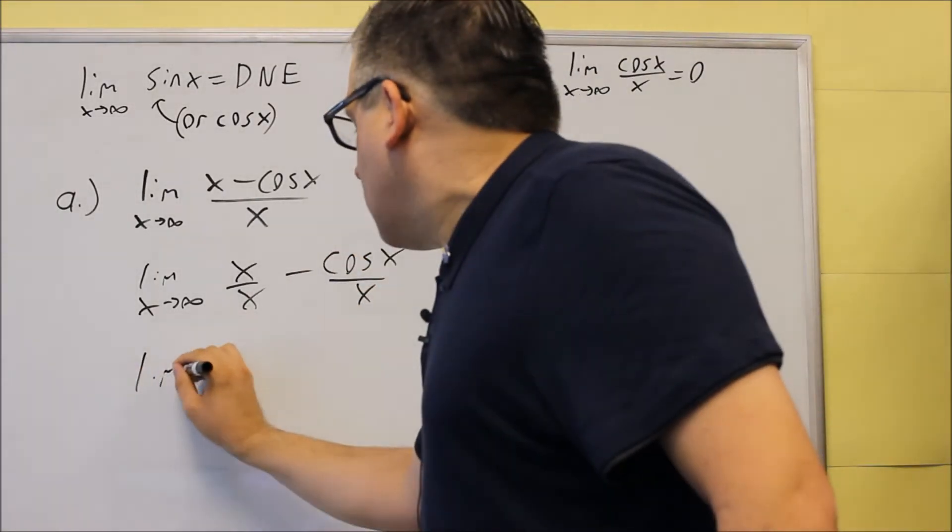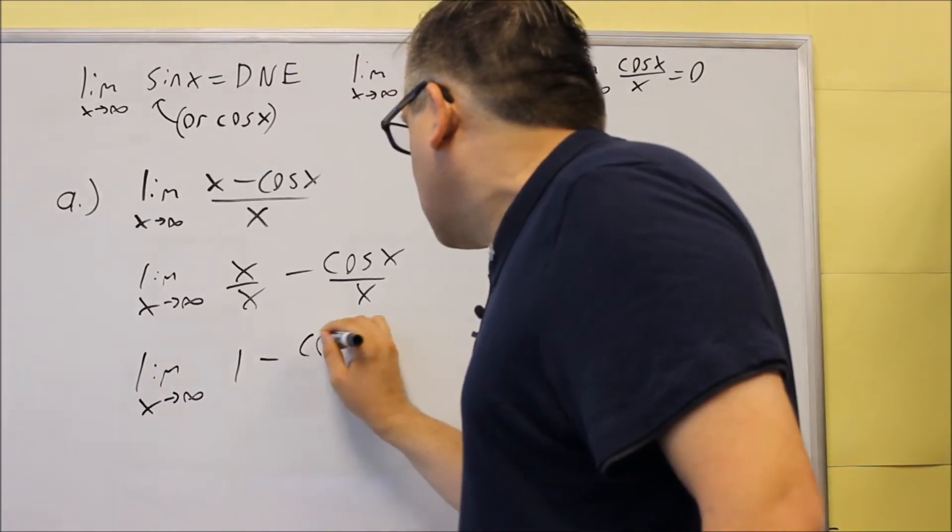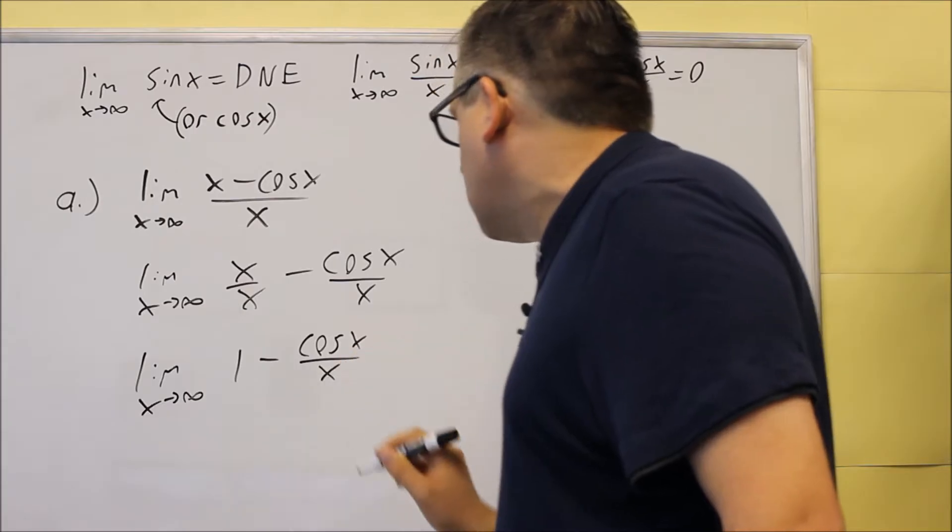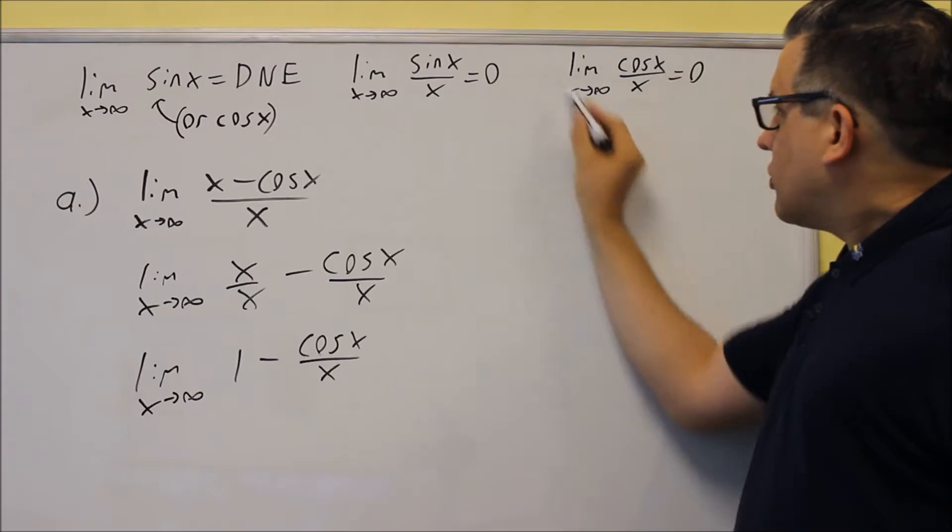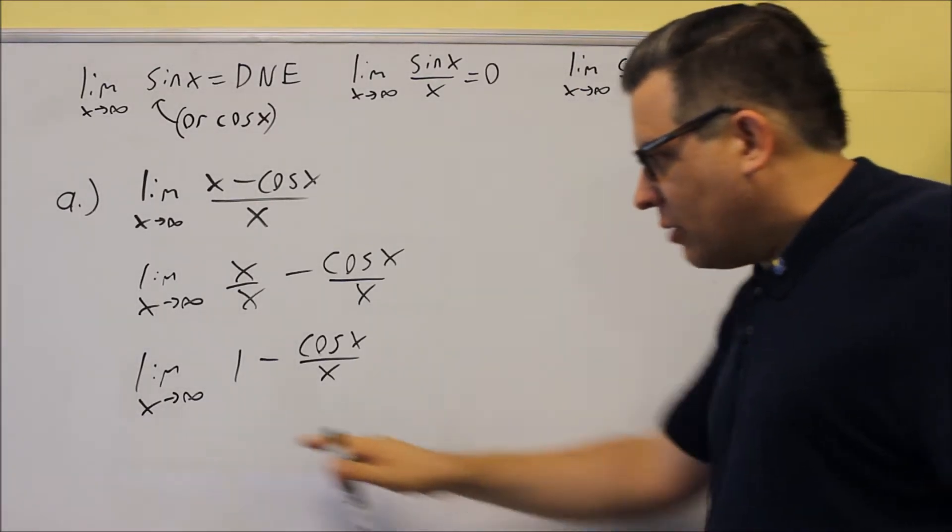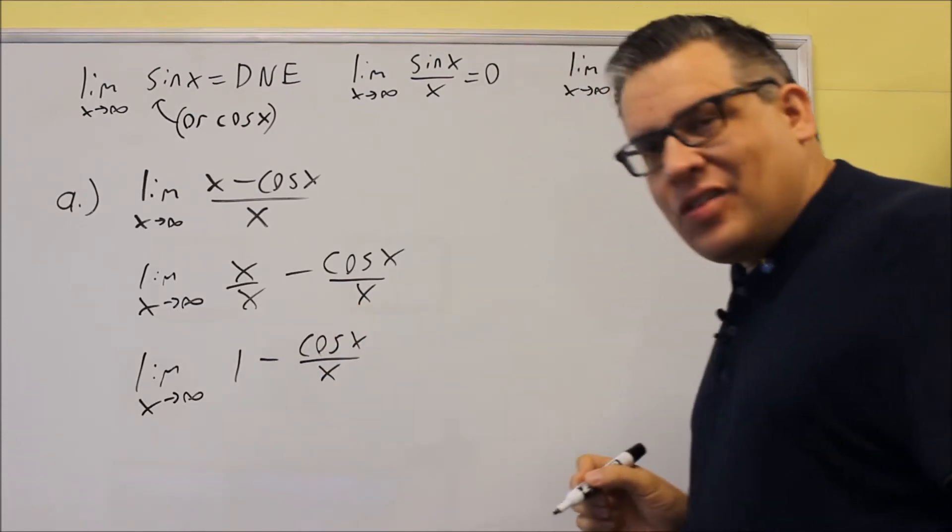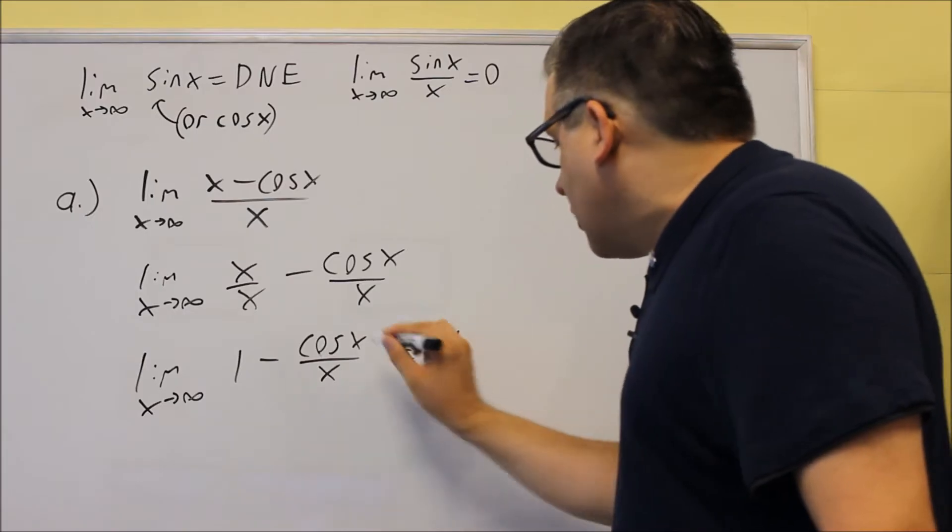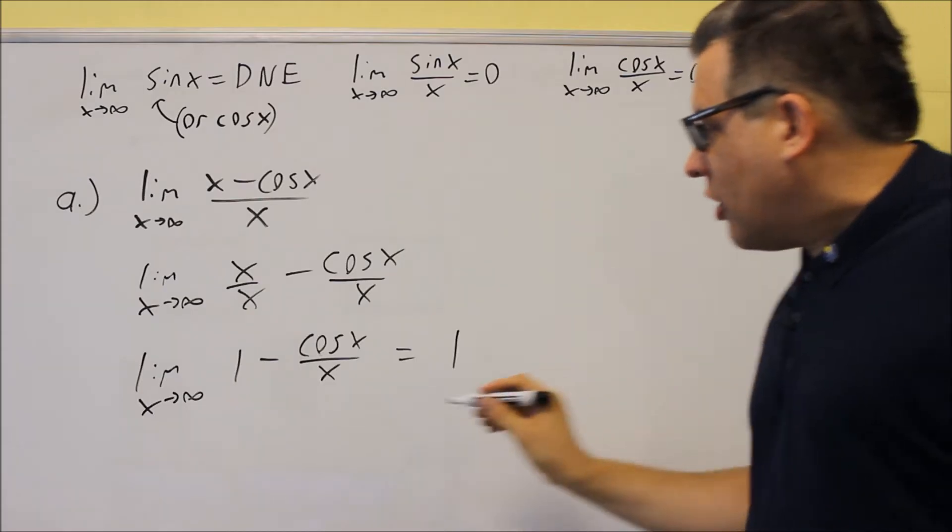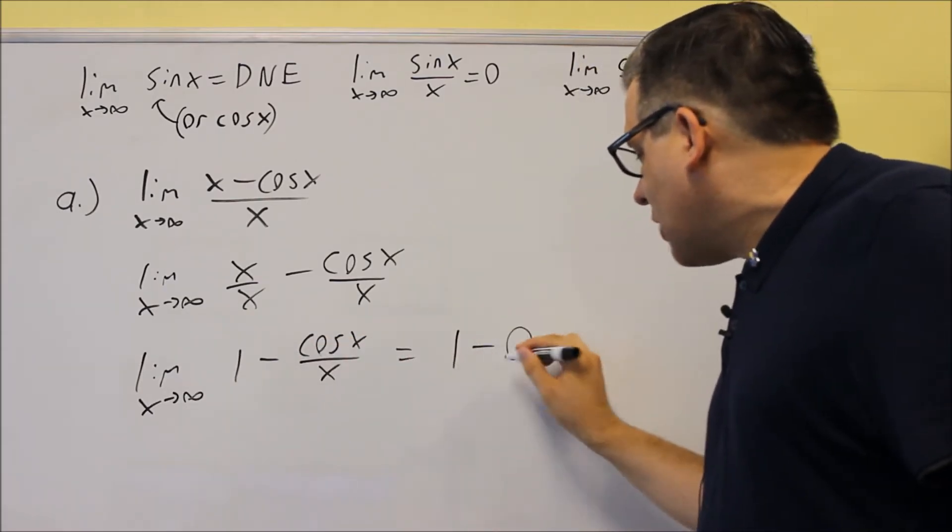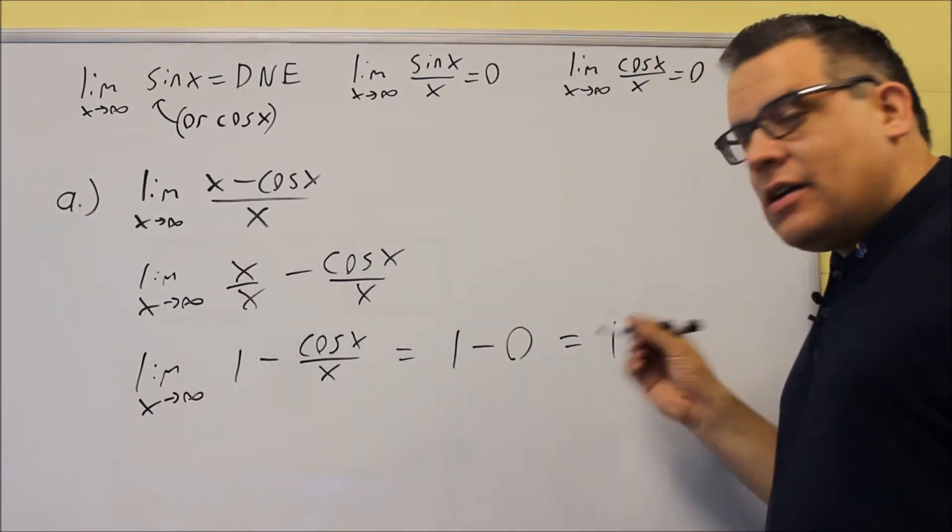Then I can simplify it, and x approaches infinity. This is 1 minus cosine x over x. So now, the reason why we wanted to do that was to create this limit by itself. So the limit does apply to each one individually. If we apply the limit to this one right here, this particular part is going to go to 0 because of the property here. So 1 remains there, and then this part is going to go to 0, which means that the answer for part A is going to be 1.